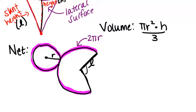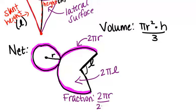Because the circumference of this whole circle, if it had all been there, would have been 2 pi l, what that means is that the fraction of the circle we're looking at is 2 pi r over 2 pi l. So that's the fraction of the circle that we're working with which reduces to just r over l.